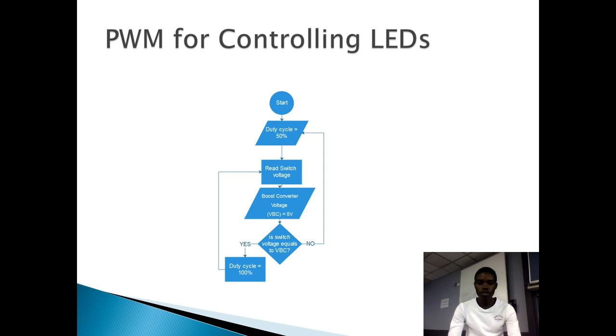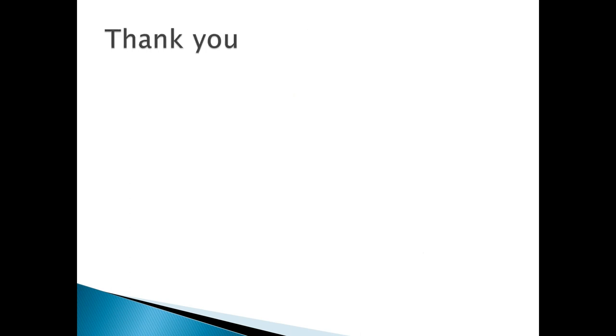When the voltage across the switch is 5 volts, we change the duty cycle to 100%, which means it's the full brightness. Otherwise, we have to keep the brightness of the LED to half duty cycle. Thank you very much.